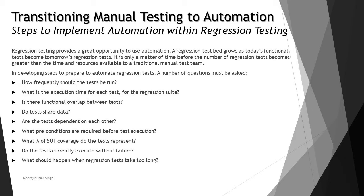In developing the steps to prepare to automate regression tests, there are a number of questions to ask. How frequently should the tests be run? What is the execution time for each test in the regression suite? Is there a functional overlap between tests? Do tests share data? Are the tests dependent on each other? What preconditions are required? What percentage of SUT coverage do the tests represent? Do the tests currently execute without failure? What should happen when regression tests take too long? We need to understand all these factors before automating the regression test suite.